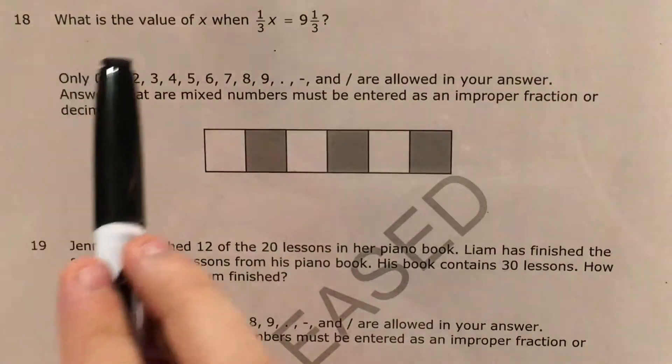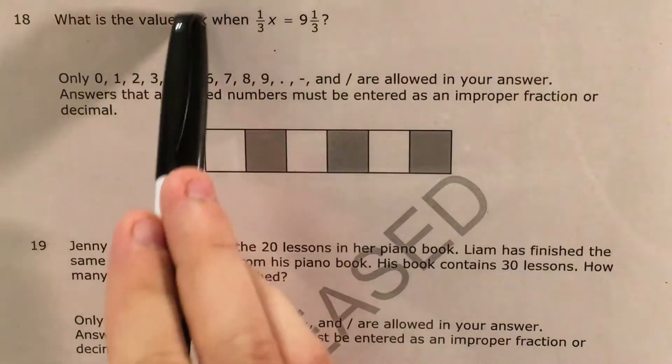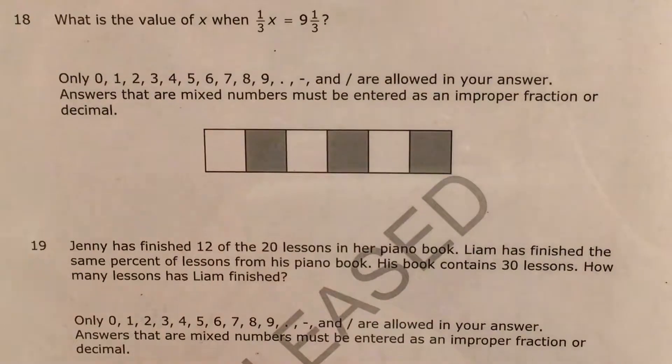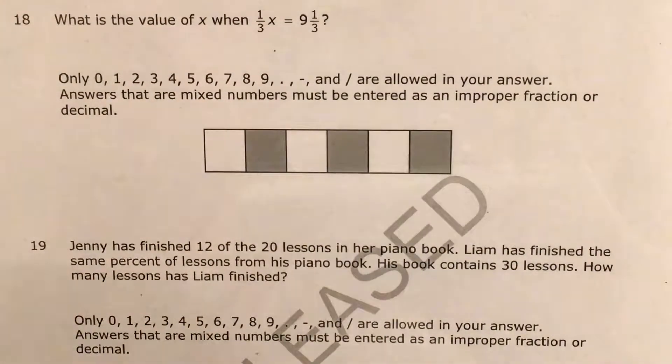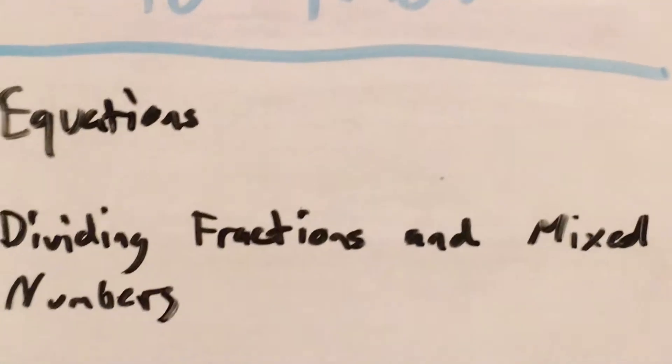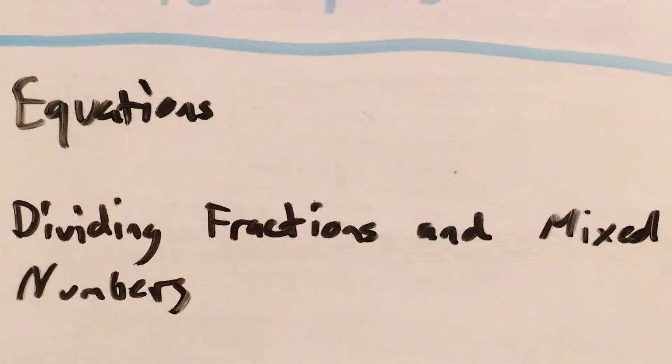We can see that we're just trying to find out the value of x, some unknown number, also known as a variable, when 1/3 times this variable equals 9 and 1/3. So in order to do a question like this really well, we'll need to know how to work with equations and also how to divide fractions and mixed numbers.